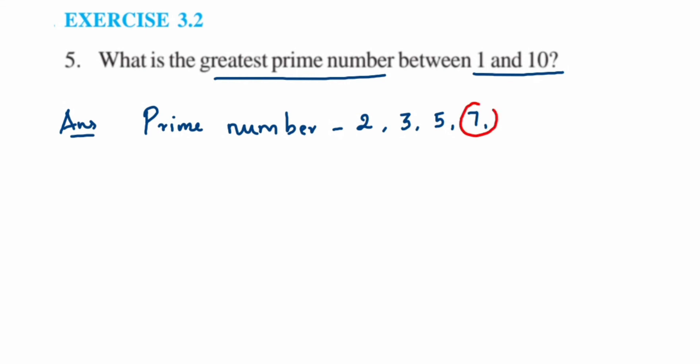So from here we can write down: greatest prime number is equal to 7. I hope you have understood. If you have any question or doubt, you can leave a comment below. Thank you so much for watching.